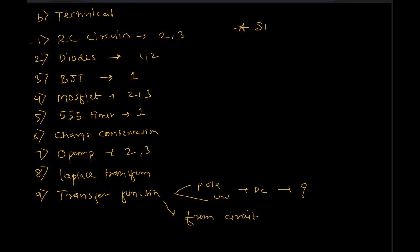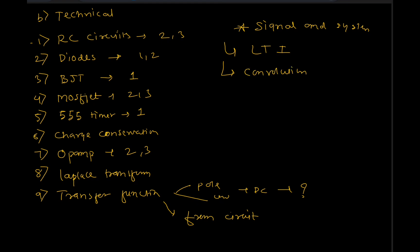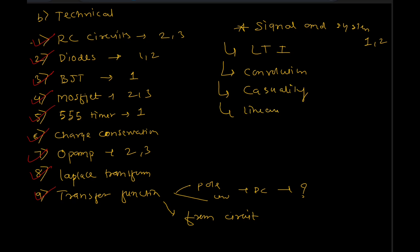Signal and Systems is also must-study — one question will definitely be there. The most important subtopics are LTI systems: study the properties of LTI systems, and then Convolution. There will be one or two questions from Signal and Systems, though it's not certain they'll ask only convolution. They can ask about causality and linearity as well — study those.